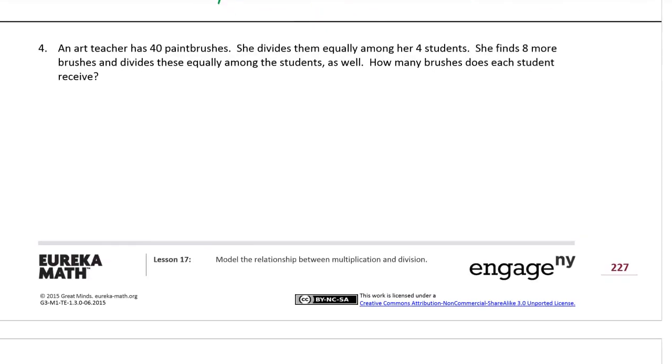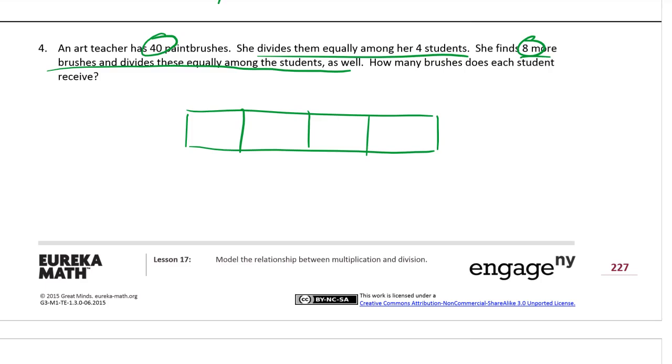And our last one. An art teacher has 40 paintbrushes. She divides them equally among her four students. She finds eight more brushes and divides these equally among the students as well. How many brushes does each student receive? So first she gives everybody, so the number of students doesn't change. There's always going to be four students. So we know how many students there are. We start out with 40 paintbrushes and then she finds eight more. So she's 40 and she finds eight more. That's 48.